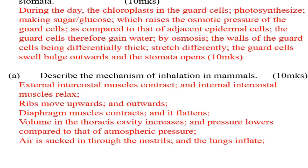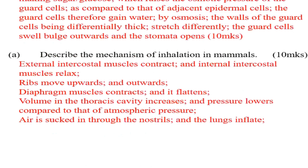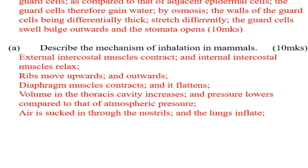Describe the mechanism of inhalation in mammals — also a very common question. The external intercostal muscles contract and internal intercostal muscles relax. The ribs move upward and outward. The diaphragm muscle contracts and flattens. The volume of the thoracic cavity increases and pressure lowers compared to atmospheric pressure. Air is sucked in through the nostrils and into the lungs, and the lungs inflate.